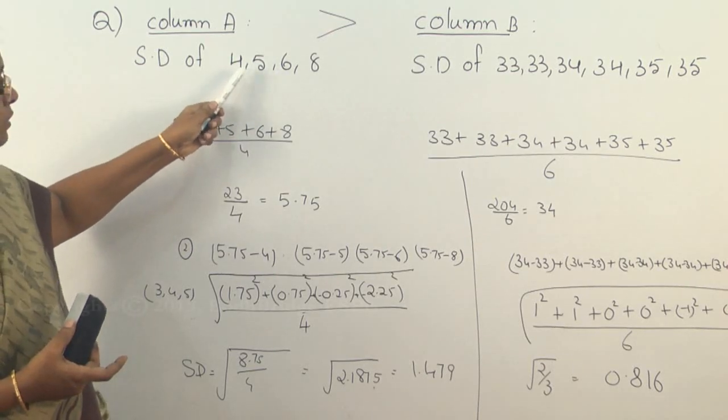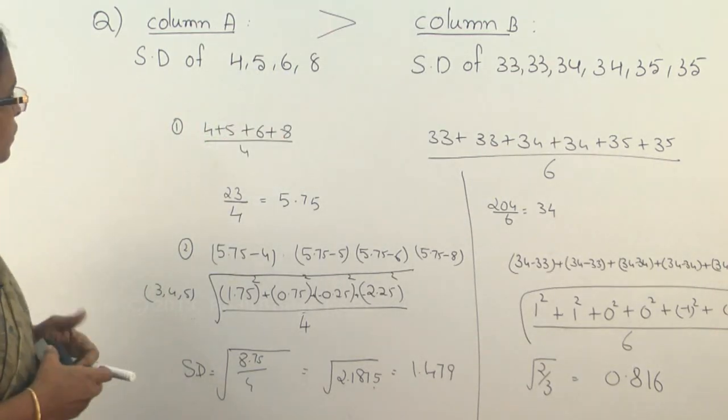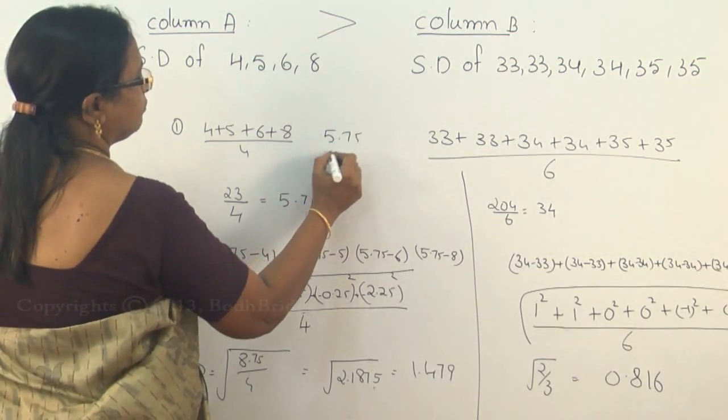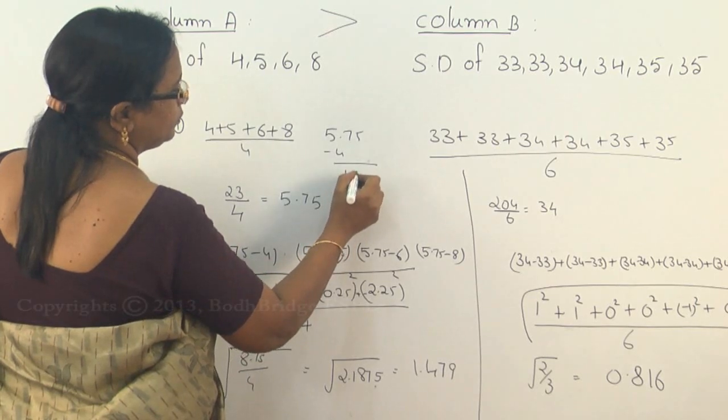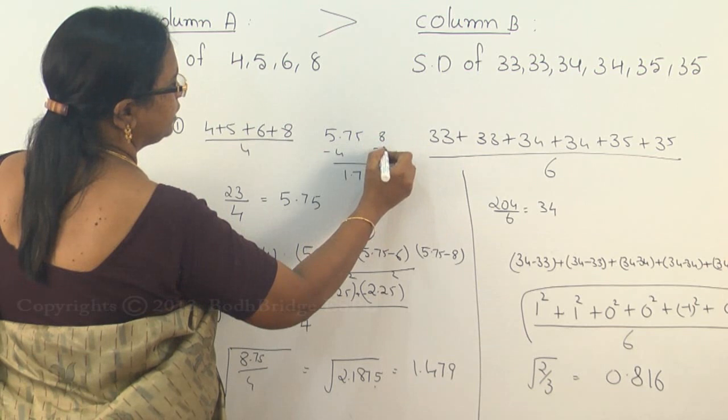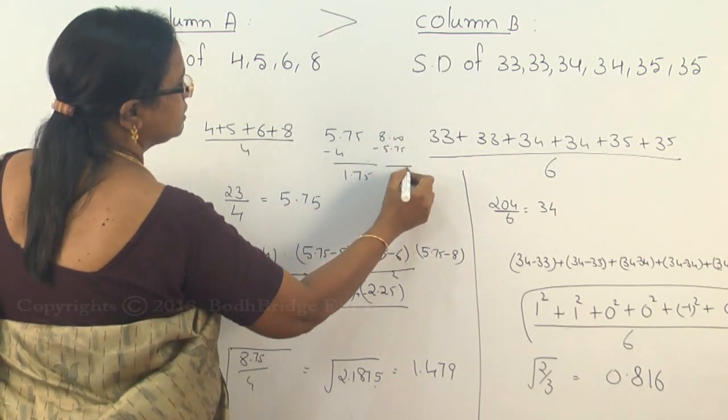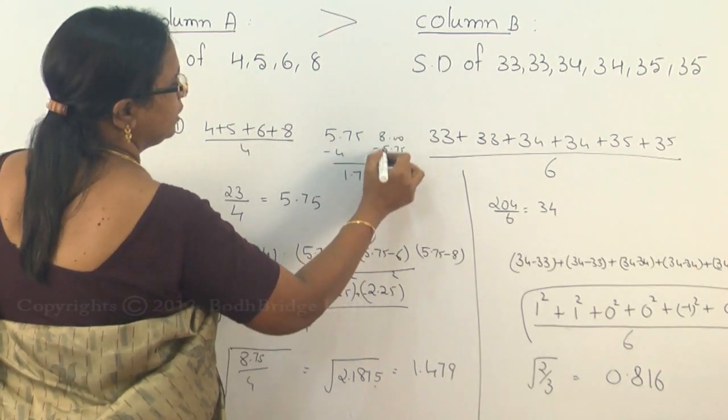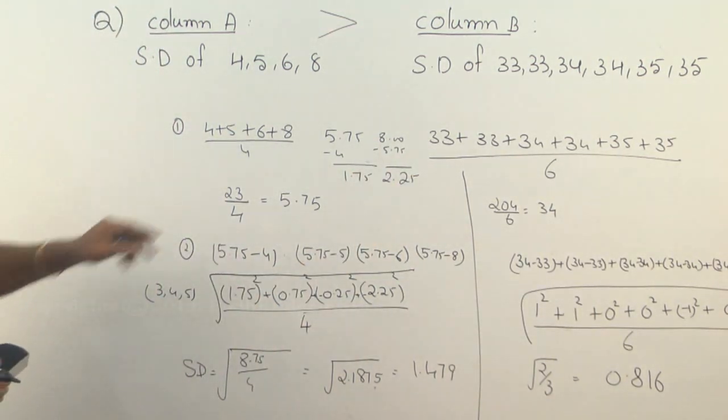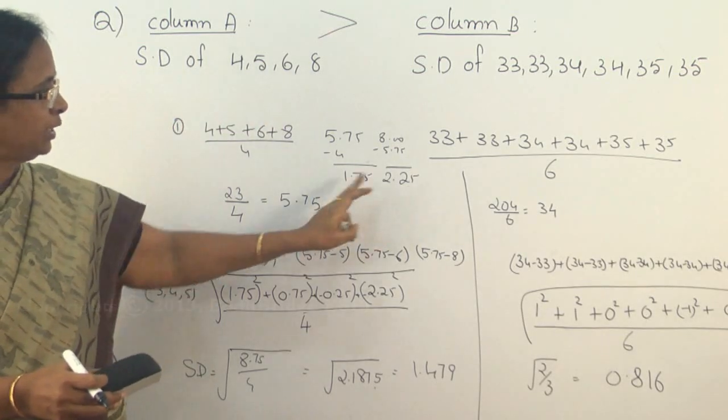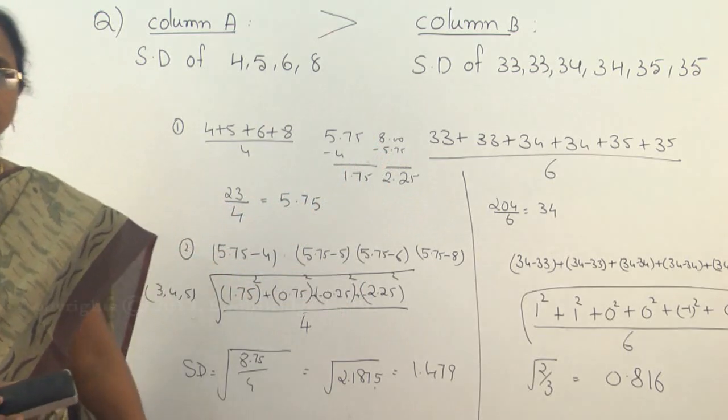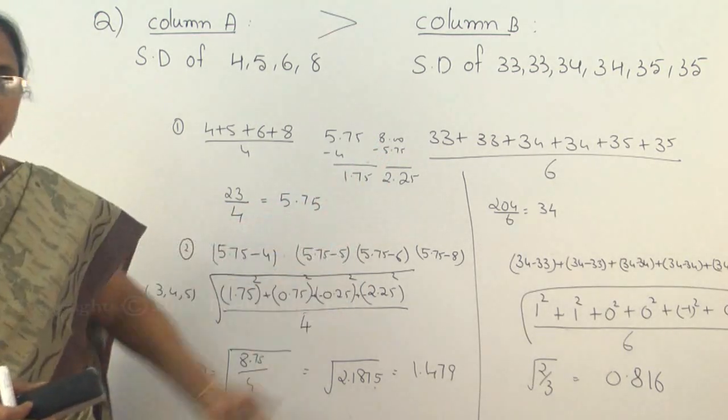And if you take the mean as 5.75, from there to the least value and the highest value, how much is the difference? So 5.75 is the value which you are getting here. Minus 4 when you do it, the answer is 1.75. Similarly, the other side, 8 minus 5.75, this is 2.25. So you can see the difference here from the mean to the least value and the highest value. The difference is around 1.75 this side, the other side is 2.25.